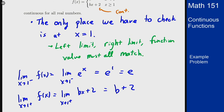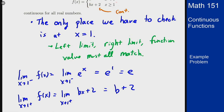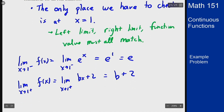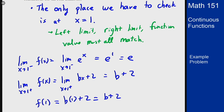And then, finally, for the function value: since the inequality for the bottom piece has greater than or equal to, that means I'm defining the function there. I plug in the value of 1 into the bottom part of it, which means the function value at 1 should be b times 1 plus 2, or b plus 2.